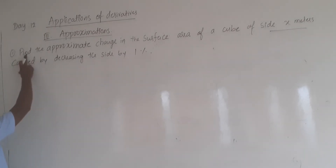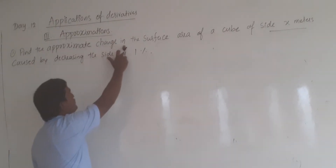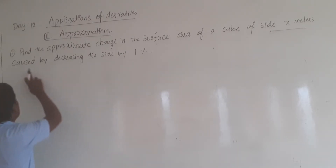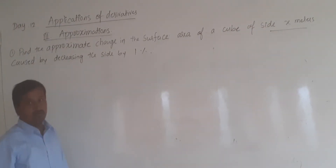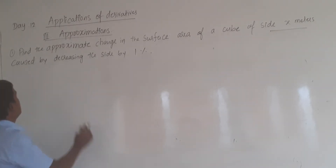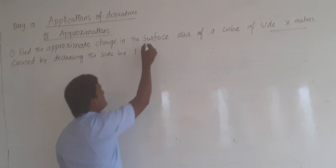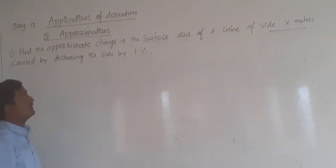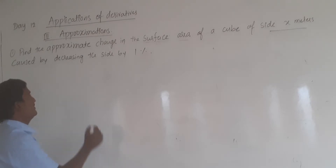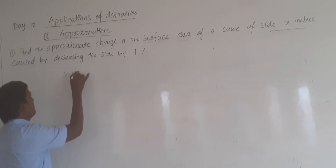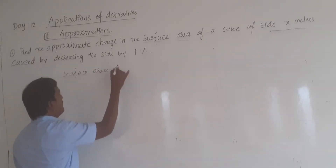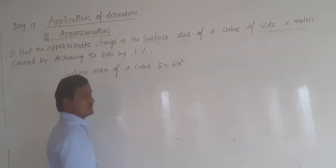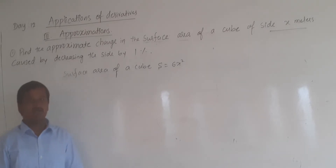The first problem: find the approximate change in the surface area of a cube of side x meters caused by decreasing the side by one percent. In this problem we have to find the surface area of a cube. You know that the surface area of a cube is S equal to 6x squared. This is the formula to find the surface area of a cube.